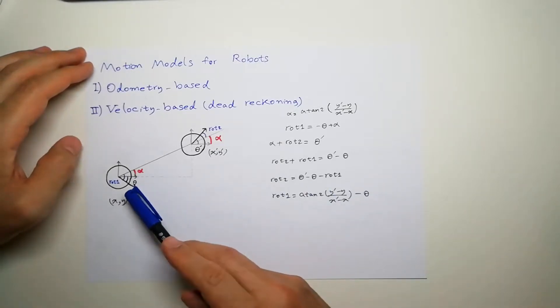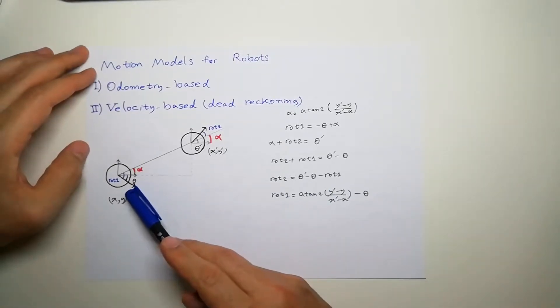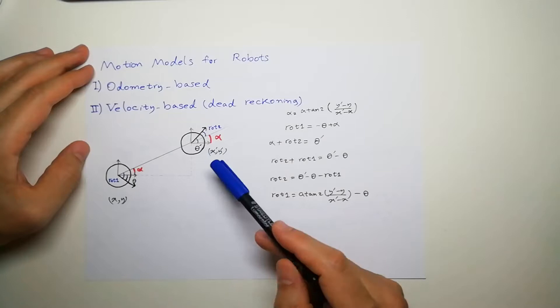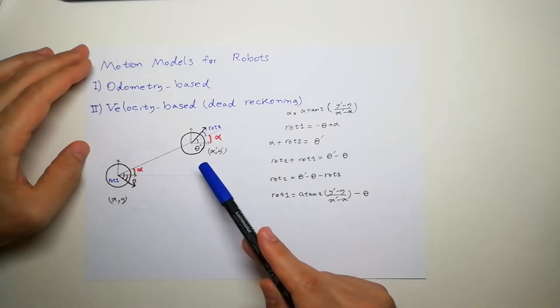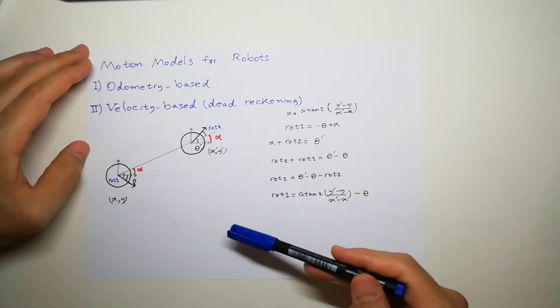So, let's say this is your robot, and it has this heading with the position of x and y, and the new position is x prime, y prime with the heading of theta prime. How can we find the motion model for such a movement?